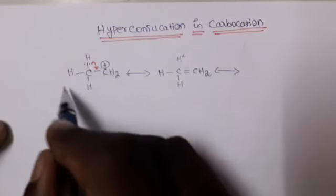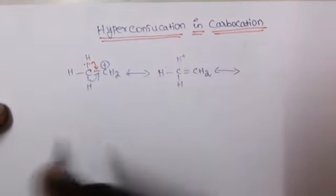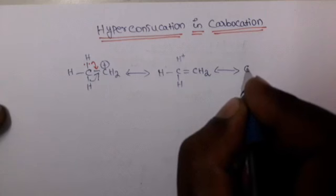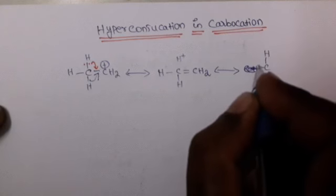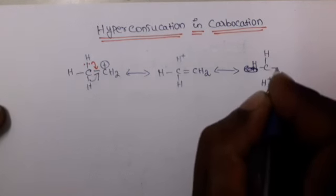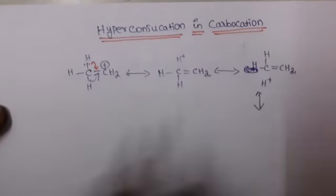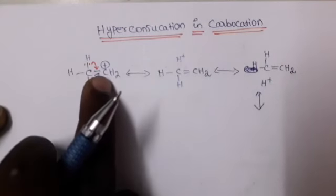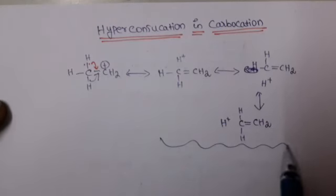Any of the three Hydrogens can contribute. In another case, a second Hydrogen contributes its two Electrons for the double bond — the other two Hydrogens remain and the contributing Hydrogen detaches, forming a double bond. In a third case, the remaining Hydrogen also detaches, forming a double bond. So we have a total of three hyperconjugation structures.